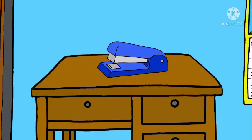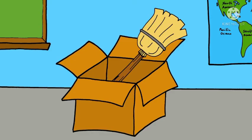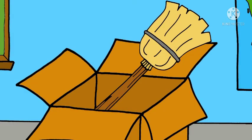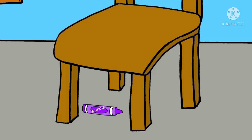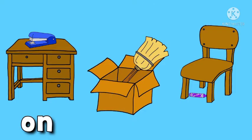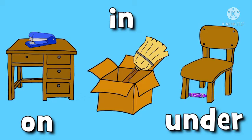Now see this. Where is the stapler? On the table. Where is the broom? In the box. And where is the crayon? Under the chair. It is under the chair. On, in, under.